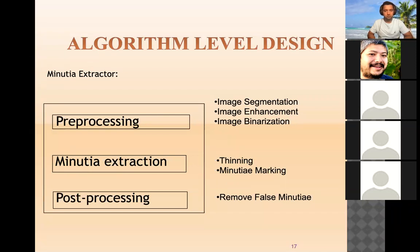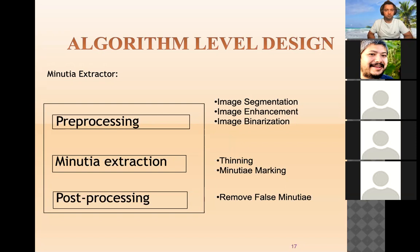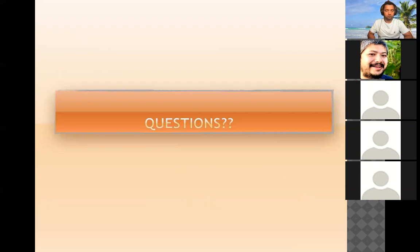At the algorithm level, three main processes are involved: pre-processing, minutiae extraction, and post-processing. Pre-processing has three sub-processes: image segmentation, enhancement, and binarization. After pre-processing, the segmented and enhanced fingerprint is further processed to identify the main and distinctive minutiae under minutiae extraction — with steps of thinning and minutiae markings. Once we have those minutiae markings on the trained images, post-processing performs false minutiae removal.